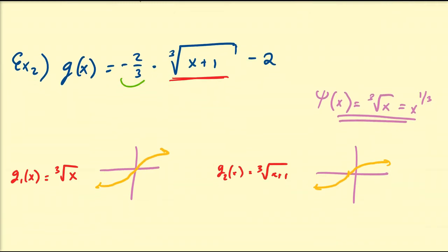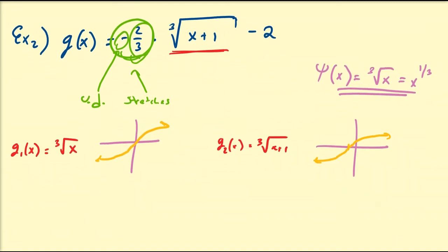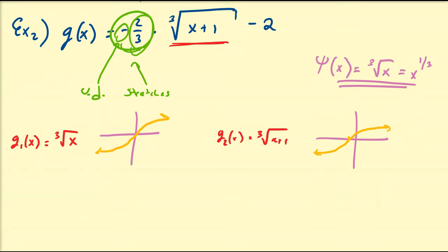Now let's apply the factor in the front. The minus sign flips it upside down, and the 2/3 stretches it. It stretches it because 2/3 is less than 1, not bigger than 1. So that's going to make it a little bit wider and flip it upside down — so instead of that orientation, it's going to be that orientation, a little bit wider.